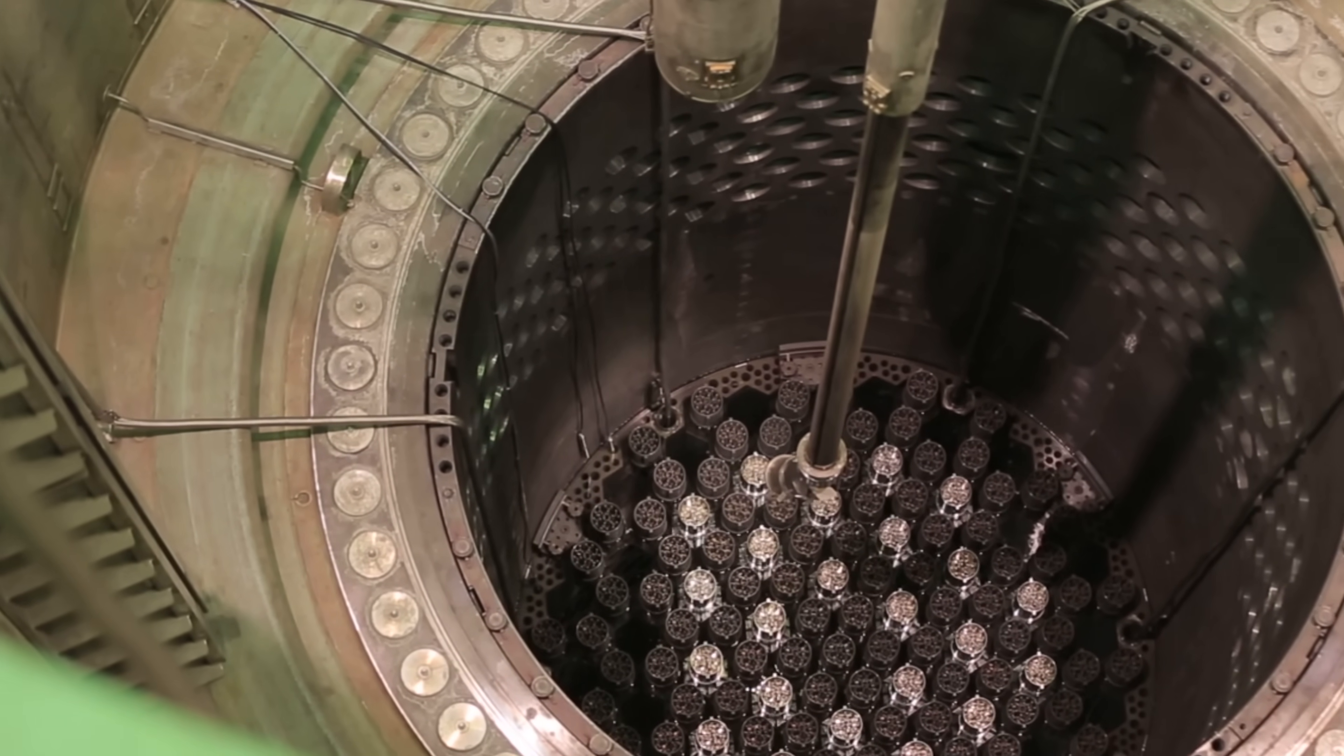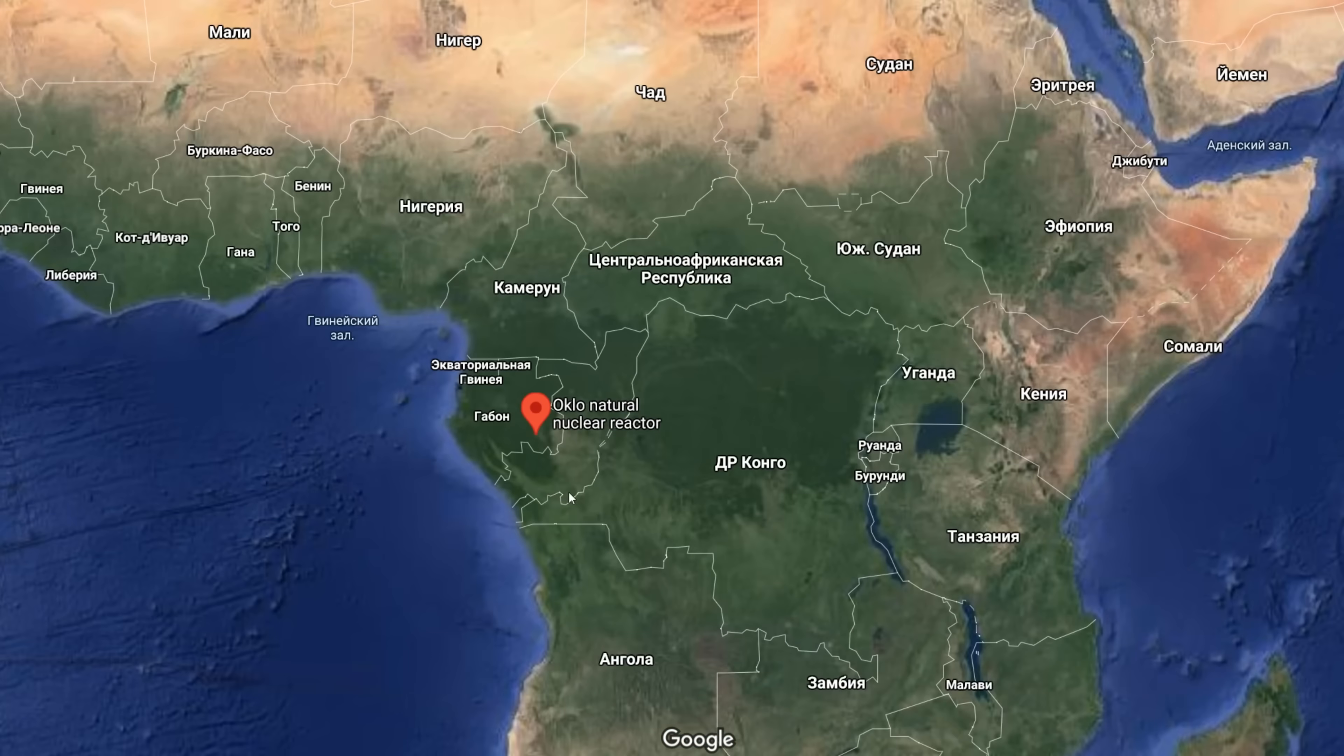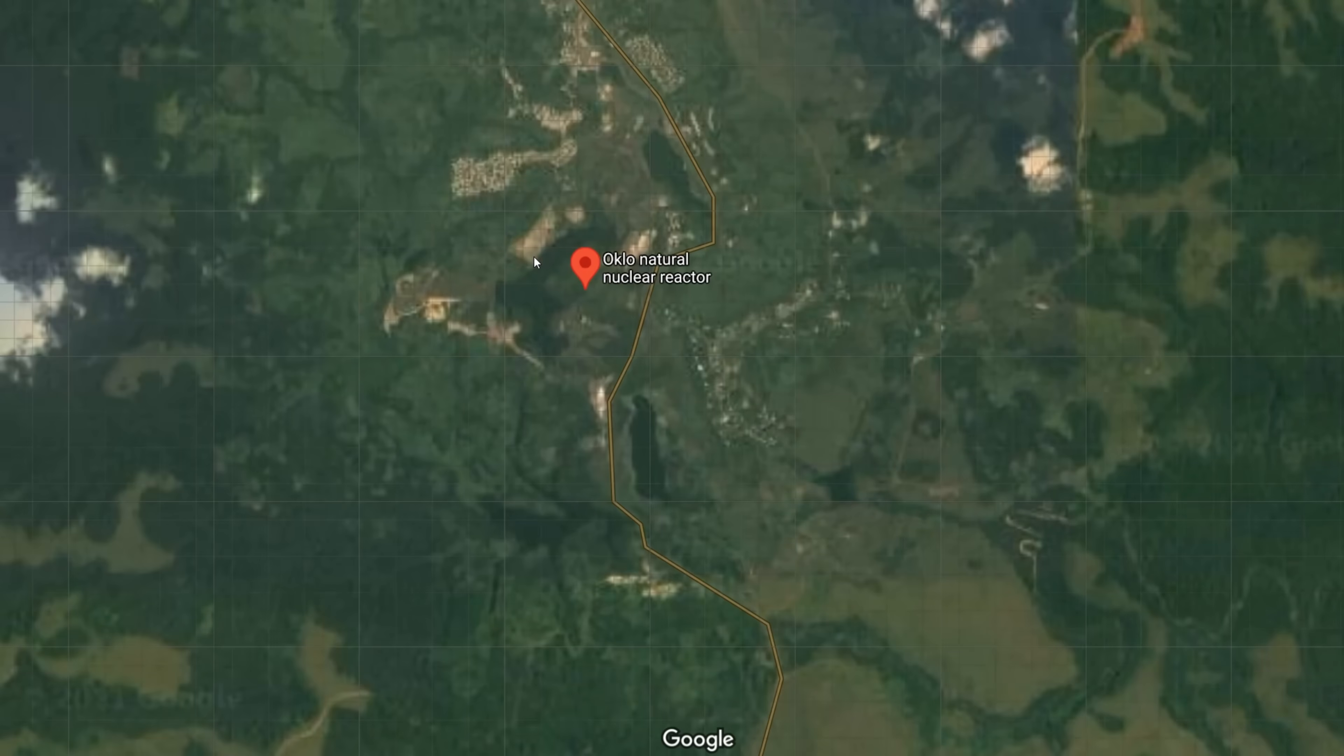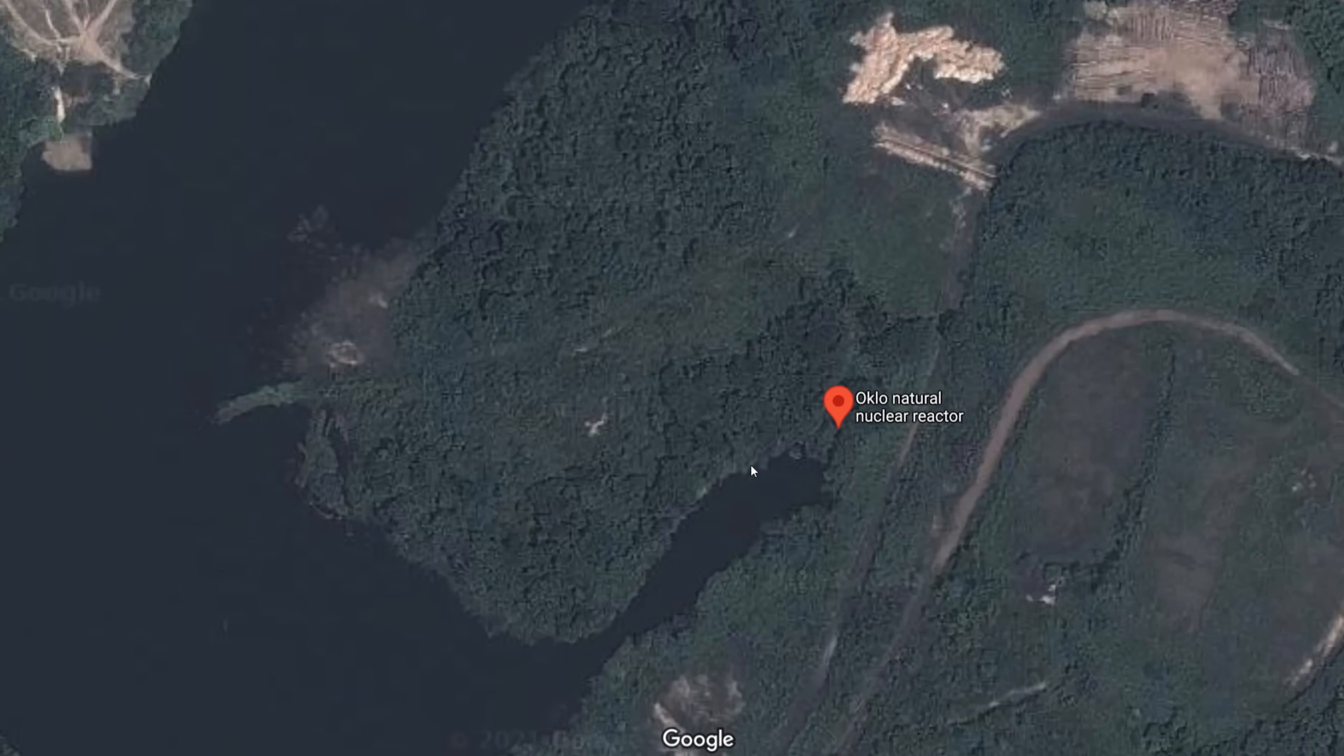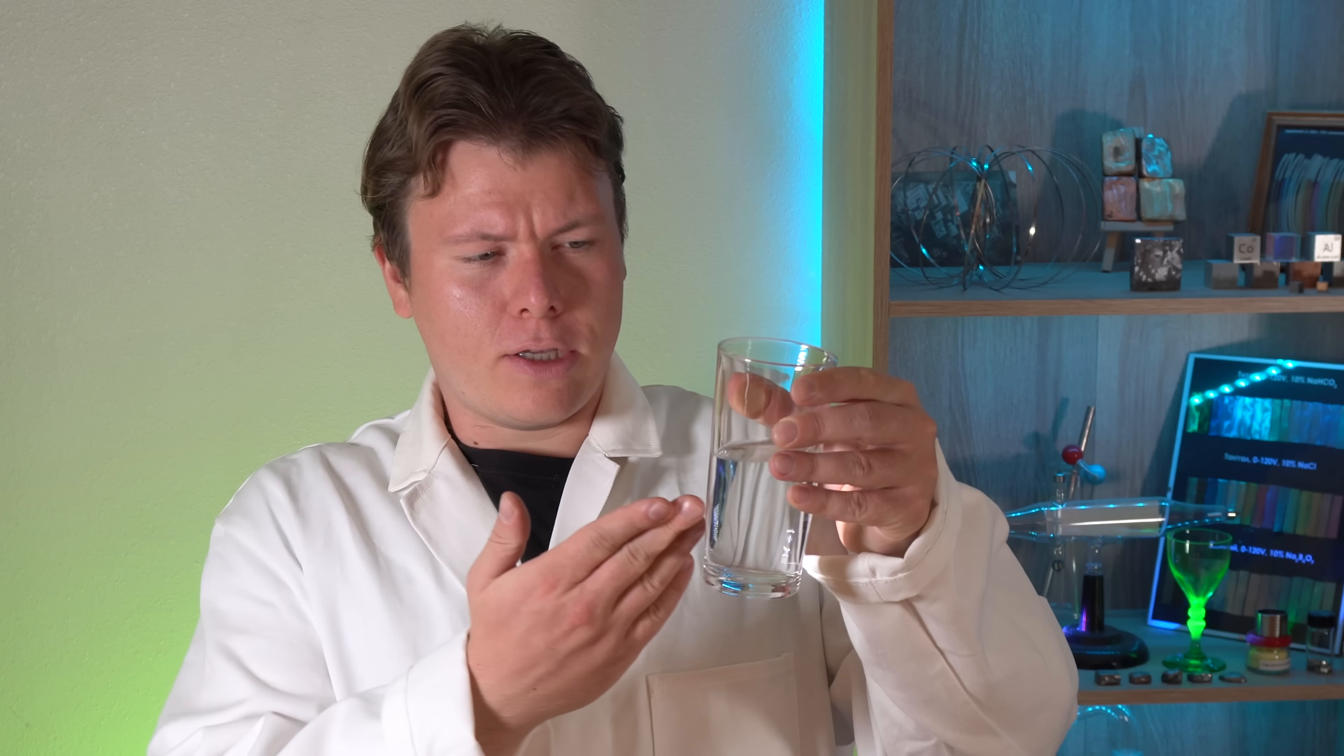Besides being found in nuclear reactors built by humans, later on, technetium was also found in a so-called natural nuclear reactor, which is located in the African country of Gabon. It turns out, in a place called Oklo in Gabon, there are rich uranium deposits, and according to scientists' calculations, about 2 billion years ago, the underground uranium deposits began to be inundated with groundwater.